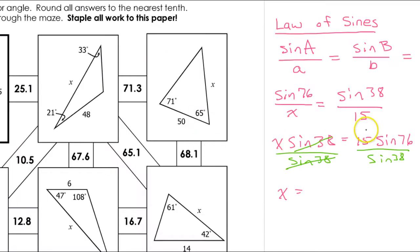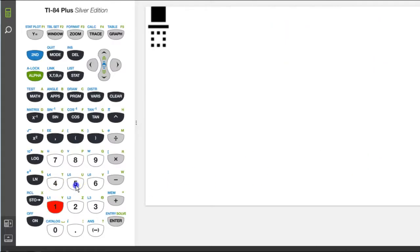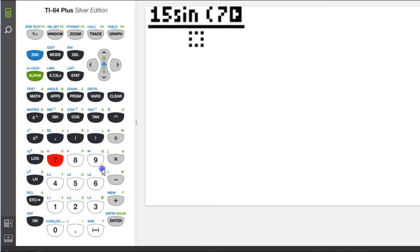So I'm going to type in 15 sine 76 over sine 38. Alright, so 15 sine 76 divided by sine 38.